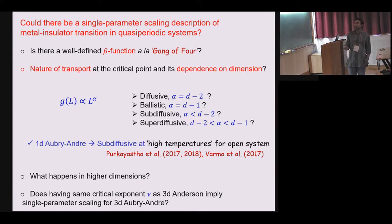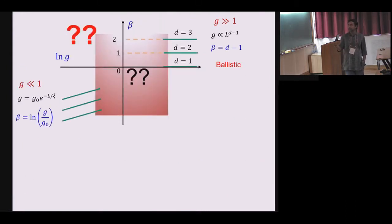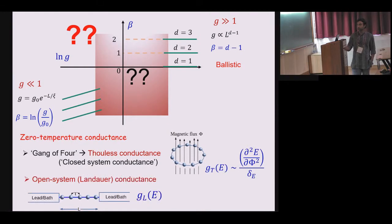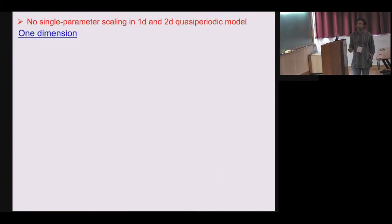So since my time is up I will just state the results. So this is the basic question: is there even a similar diagram like beta versus log G that you draw for random system which you can draw for a quasi periodic system. And again here we know the asymptotic behaviors. How do you connect this asymptotic behavior if such diagram exists. So what we calculate, we calculate various conductance. One is Thouless conductance and you can calculate this Landauer conductance for open system.